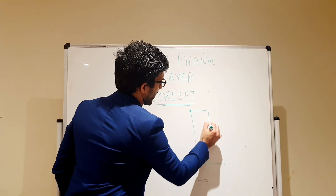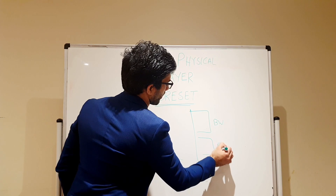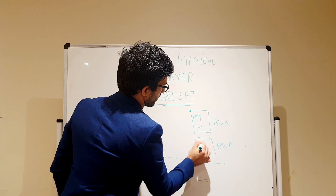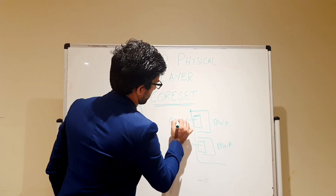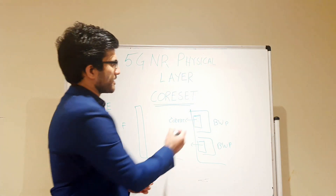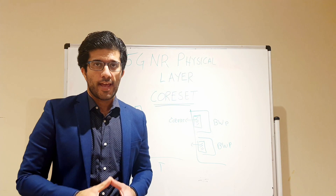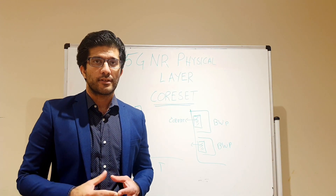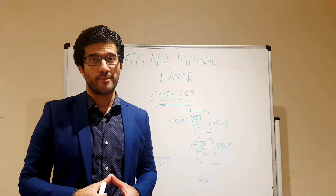In 5G we have a bandwidth part — a BWP. Within that BWP, we have a particular portion which is your CORESET. This is your entire bandwidth, and in this particular part you have your CORESET. The CORESET is defined by certain parameters: the first parameter is the number of resource blocks it occupies in the frequency domain.